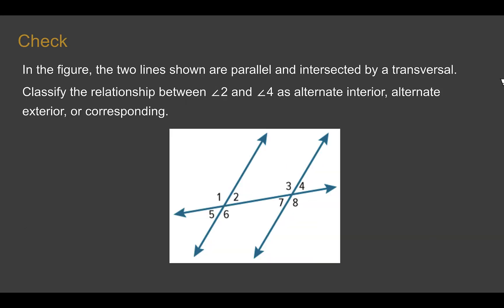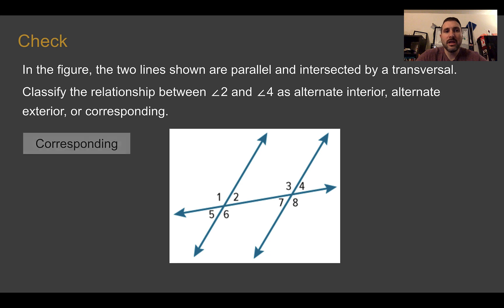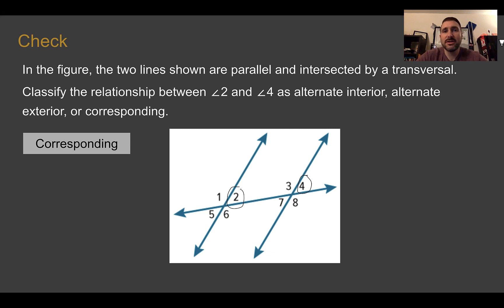Check your understanding. Looking at the picture, classify the relationship between angle two and angle four. Pause the video now and complete the check. You should have said angles two and four are corresponding — they are in the same position in relation to the transversal, here in the top-right corner, so that is corresponding.